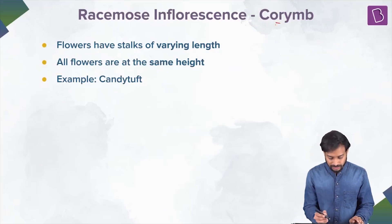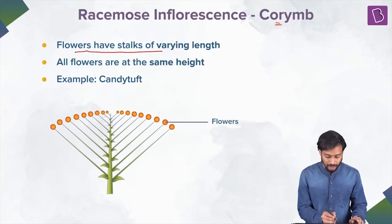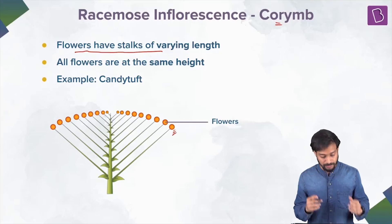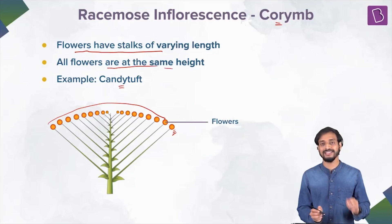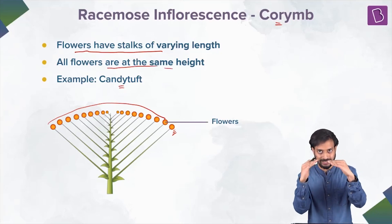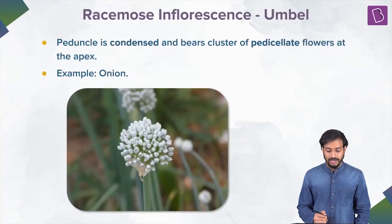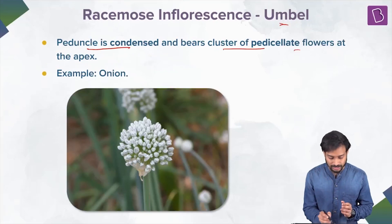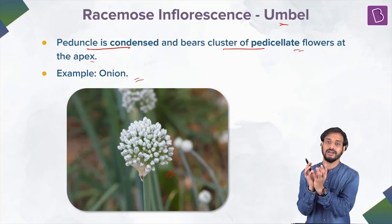Another type is the corymb, which is a racemose inflorescence where flowers have stalks of varying lengths so that all flowers come to the same level or form a convex structure. Example is candytuft. The umbel is where the peduncle is condensed and bears a cluster of pedicellate flowers at the apex. A simple example is onion.